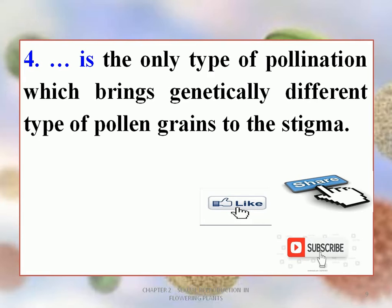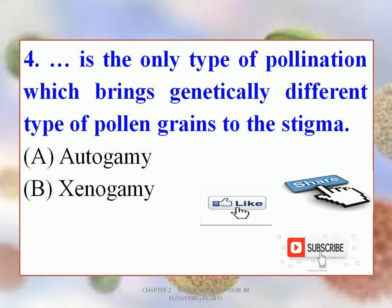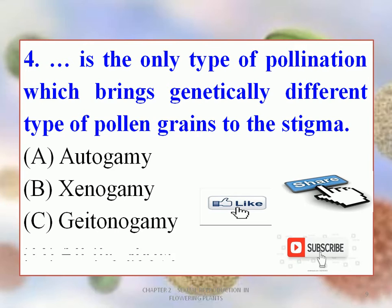Fourth MCQ: Dash is the only type of pollination which brings genetically different pollen grains to the stigma. Options: A. Autogamy, B. Xenogamy, C. Geitonogamy, D. All the above. The correct option is B. Xenogamy. Yes, Xenogamy is the only way when a genetic difference can be seen in the pollen grains transferred.